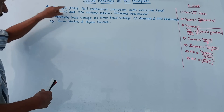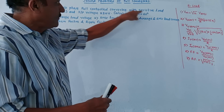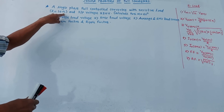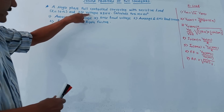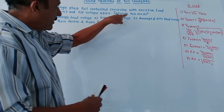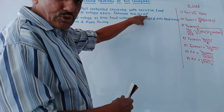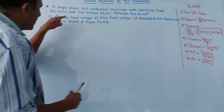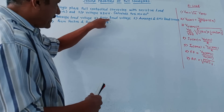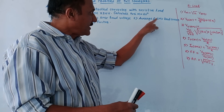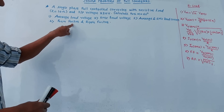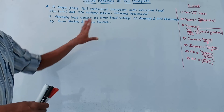First numerical: a single-phase full-controlled converter with resistive load. Value of R is 10 ohm and input voltage is 230 volt. Calculate for alpha equals 60 degrees: first, average load voltage; second, RMS load voltage; third, average and RMS load currents; fourth, form factor and ripple factor.